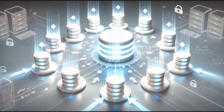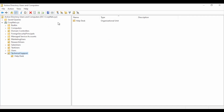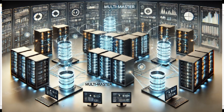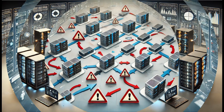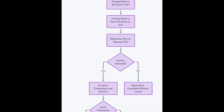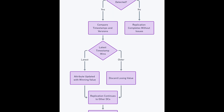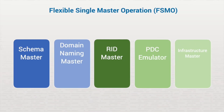The benefit of the Active Directory repository is that all the objects and their attributes can be changed by any domain controller within the domain network. This type of database repository is called a multi-master-enabled database. When conflicting changes are made to the same object, Active Directory uses a last-writer-wins algorithm to resolve the conflict. To accommodate this, Windows uses a single-master model called the Flexible Single Master Operation, or FISMO. This means there are roles that only one domain controller in the domain, or forest, handles.